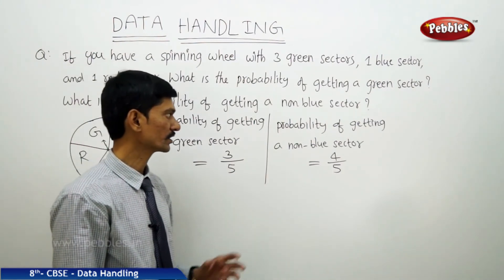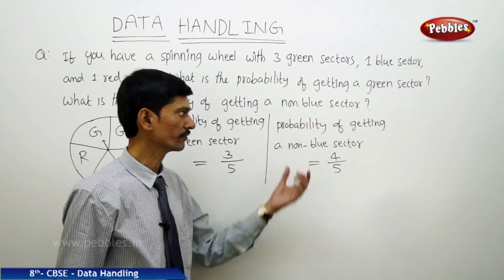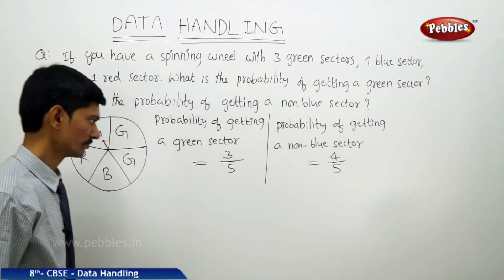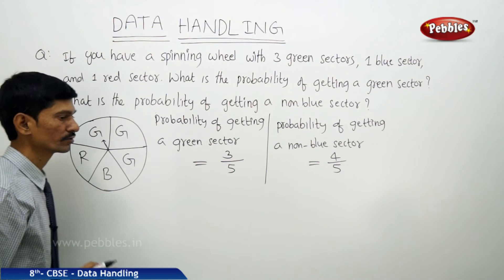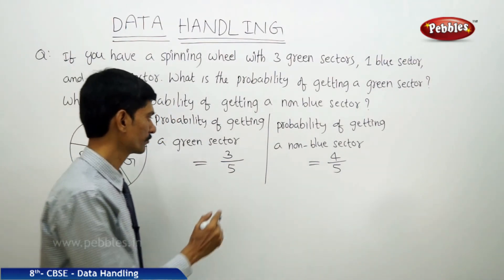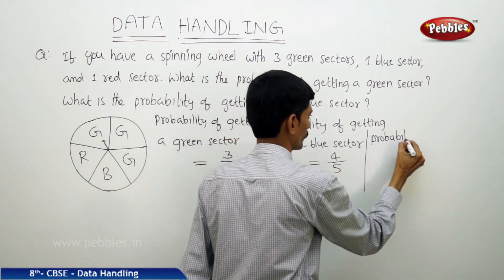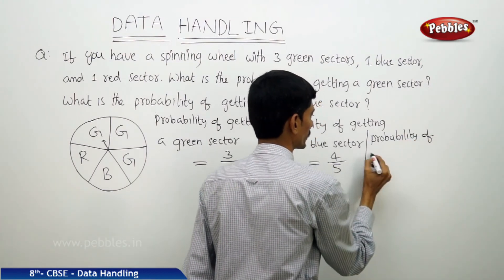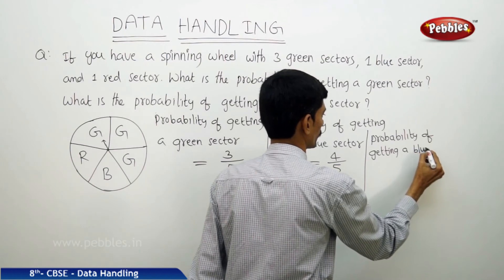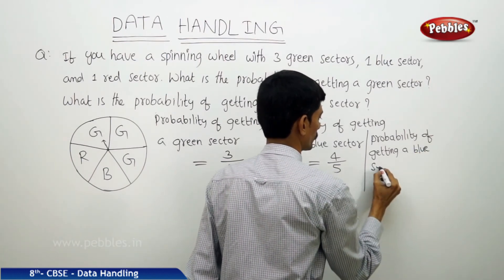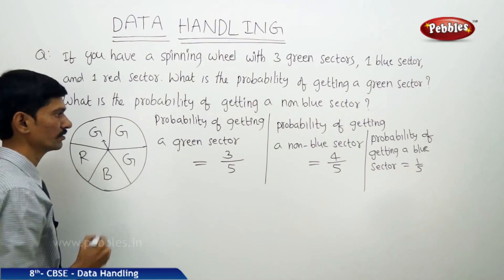Then, what is the probability of getting a blue sector? There is only one blue sector out of 5, so the probability is 1/5. What is the probability of getting a red sector? There is only one red sector out of 5 sectors, so the probability of getting a red sector is also 1/5.